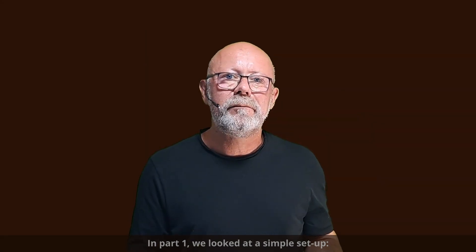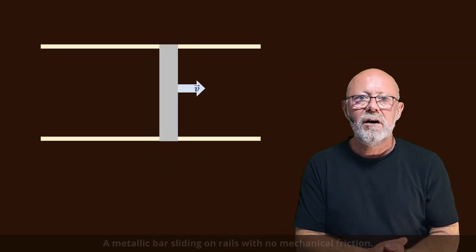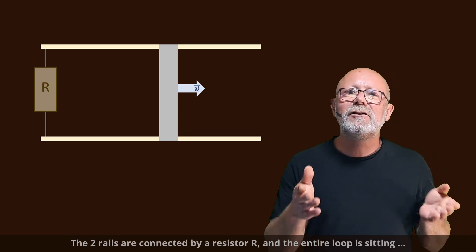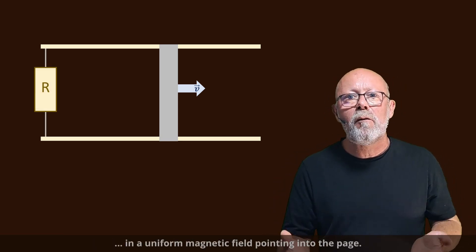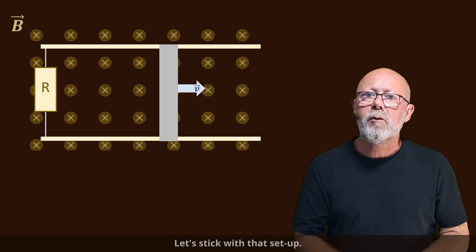In part 1, we looked at a simple setup. A metallic bar sliding on rails with no mechanical friction. The two rails are connected by resistor R, and the entire loop is sitting in a uniform magnetic field pointing into the page.